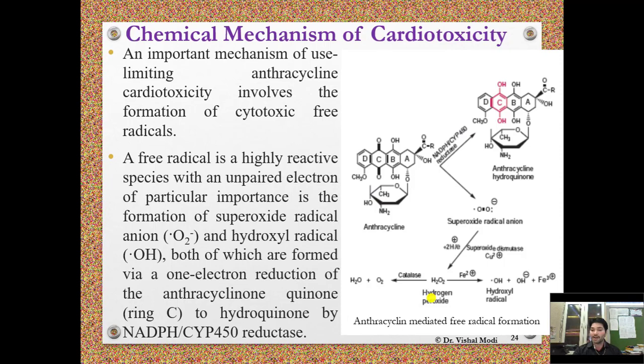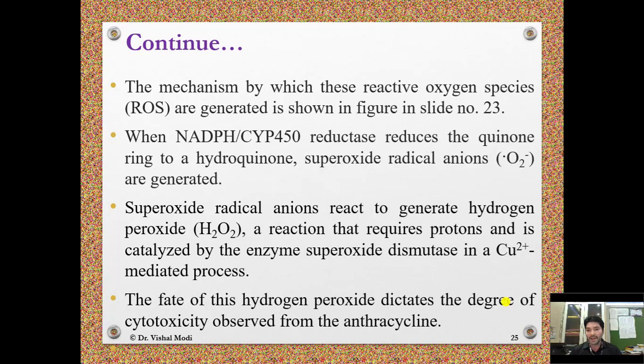However, in cardiac tissue there is not a significant amount of catalase enzyme or superoxide dismutase present. Because of this, cardiac tissue is highly vulnerable to anthracycline-type drugs. Hydrogen peroxide therefore goes down the Fenton pathway: with the help of Fe2+ cation, hydrogen peroxide produces highly toxic hydroxyl radicals, which cause cardiac toxicity. This mechanism of reactive oxygen species generation is shown in the figure in slide 23.